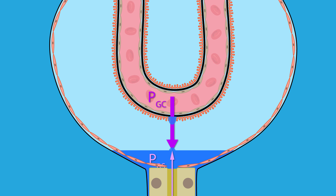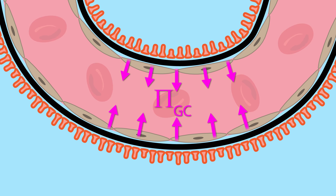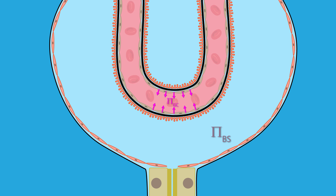On the other hand, the glomerular capillary colloid osmotic pressure opposes the formation of the glomerular filtrate. The Bowman space colloid osmotic pressure is normally zero because plasma proteins are not filtered. But if they were, the Bowman space colloid osmotic pressure would promote the formation of the glomerular filtrate.